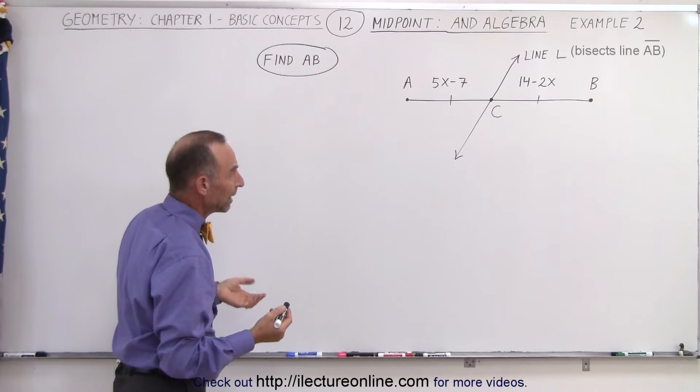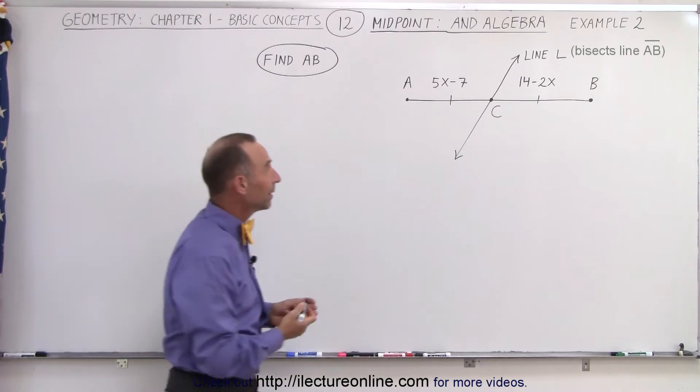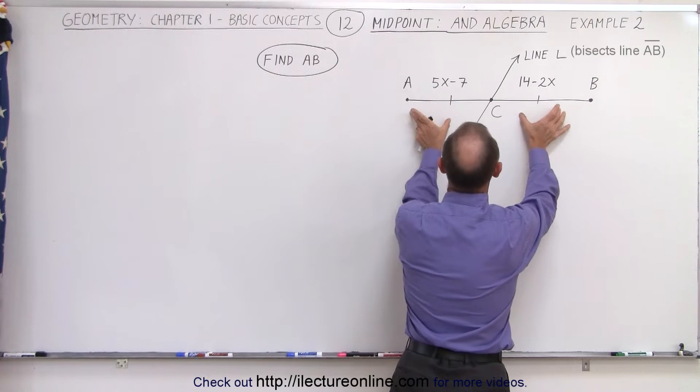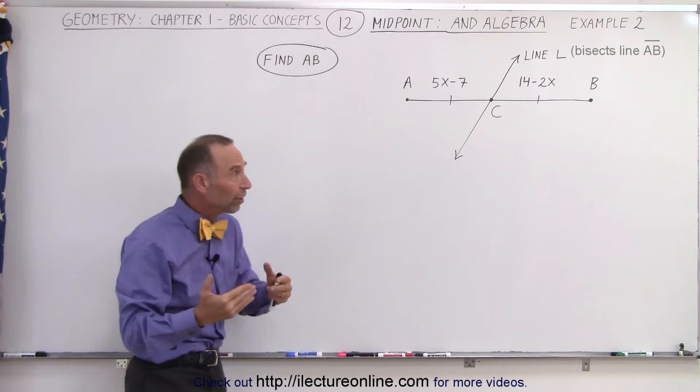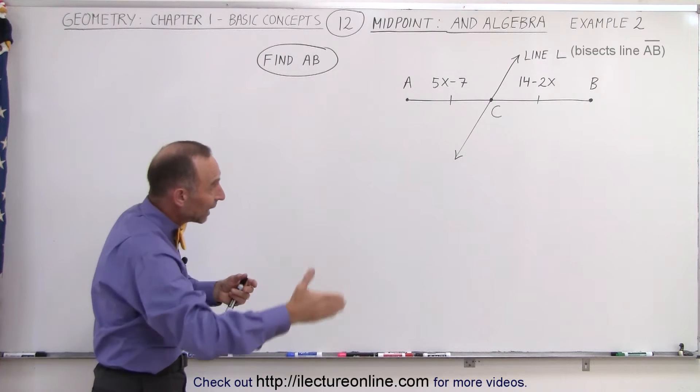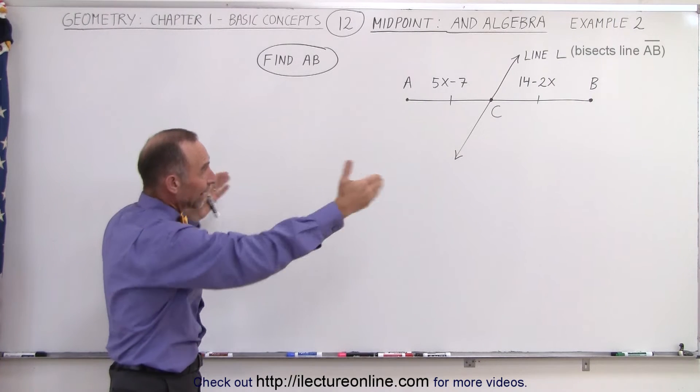So first what we're going to do is take advantage of knowing that if these two line segments have equal length, that 5x minus 7 must equal 14 minus 2x. We use that to find the value of x and then we use that to find the length from A to B.